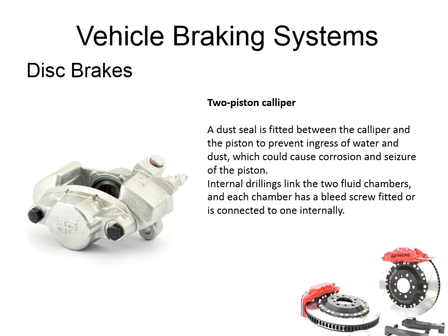In addition to the pressure seal, there is an outer dust seal fitted to brake caliper pistons — that's to stop any water, dust, or dirt that could cause corrosion or seizure of the piston, keeping it moving freely. Despite having two pistons, in all likelihood you'll only see one brake hose going to this style of caliper. Internal drillings transfer fluid from one side of the caliper to the other, and also connect both piston fluid chambers to the bleed nipple, so we can bleed air out of the caliper if air has entered the system.